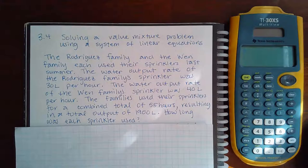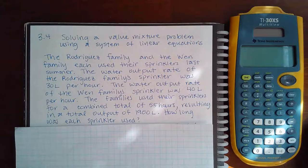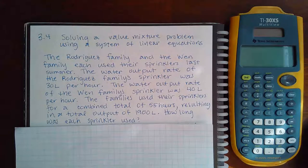This is 3.4, solving a value mixture problem using a system of linear equations. The Rodriguez family and the Wynn family each used their sprinklers last summer. The water output rate of the Rodriguez family sprinkler was 30 liters per hour. The water output rate of the Wynn family sprinkler was 40 liters per hour. The families used their sprinklers for a combined total of 55 hours, resulting in a total output of 1,900 liters. How long was each sprinkler used?